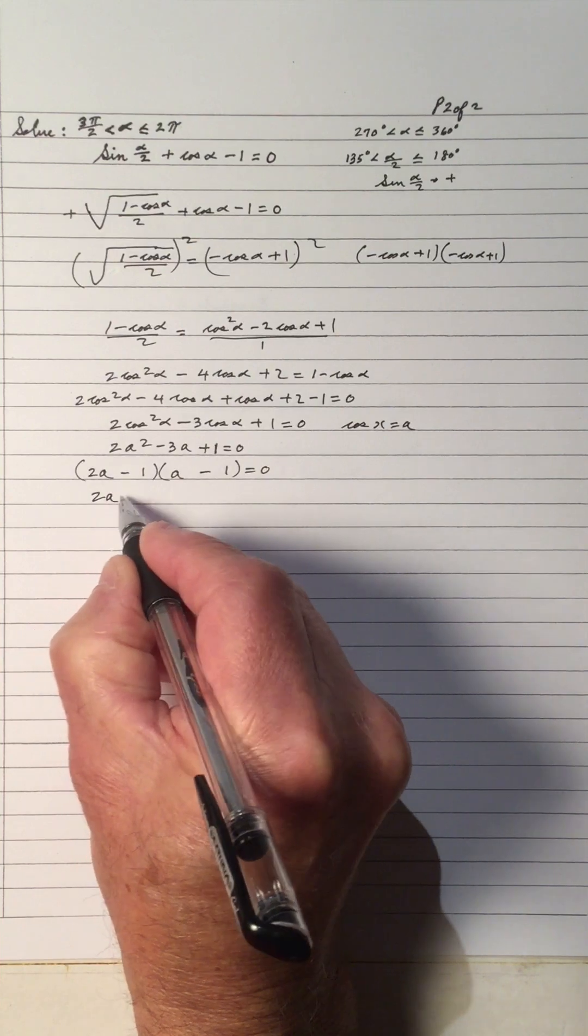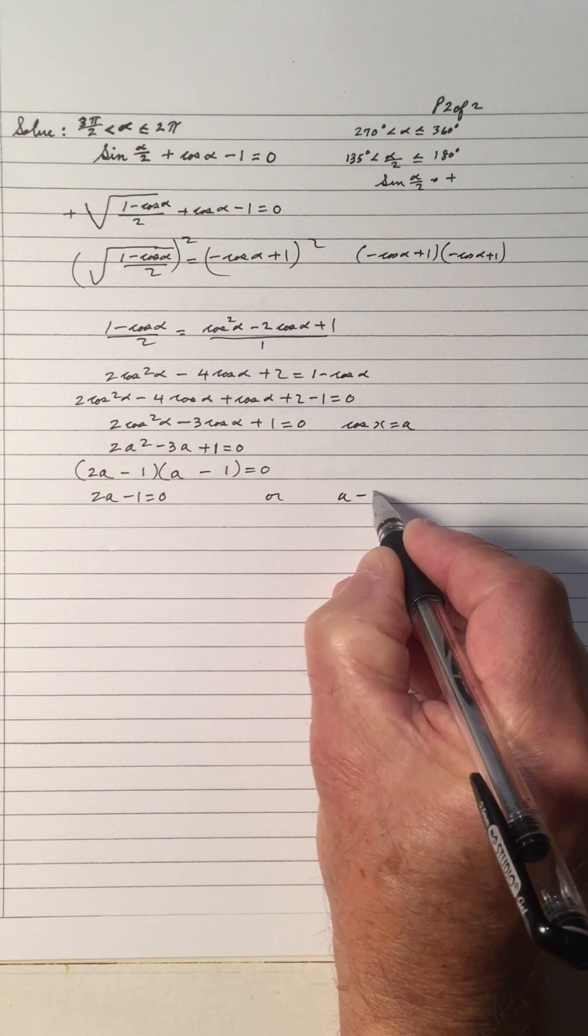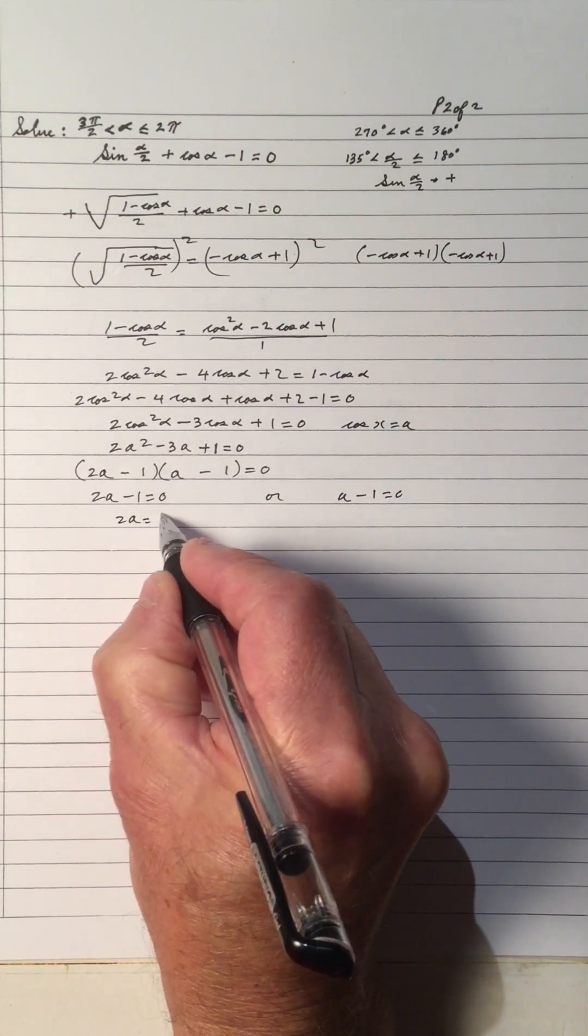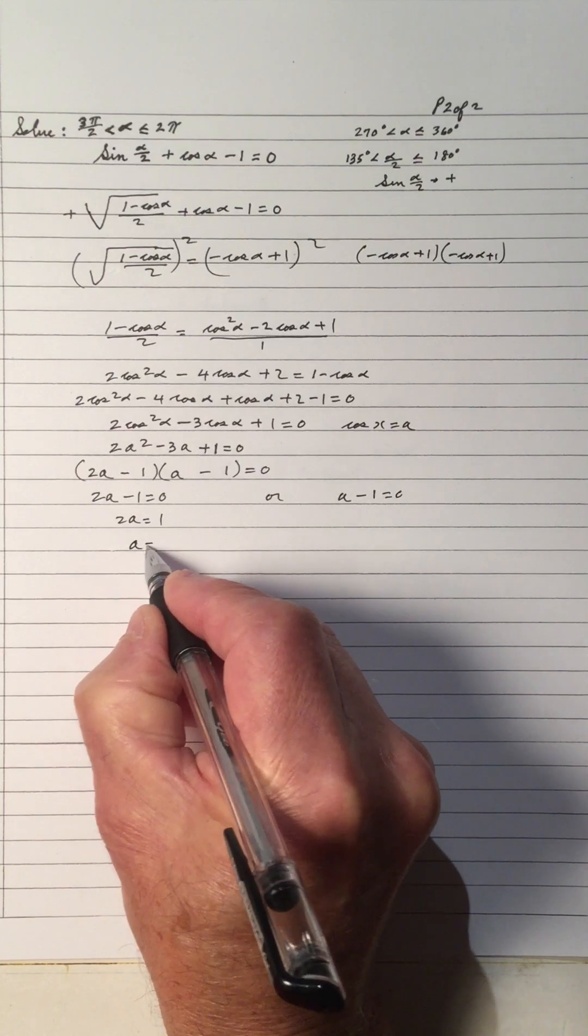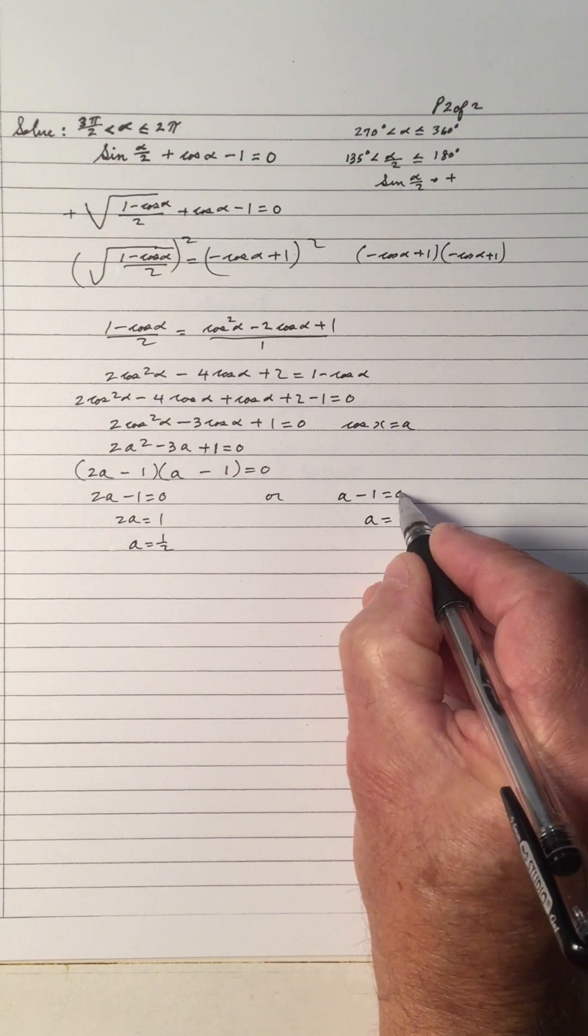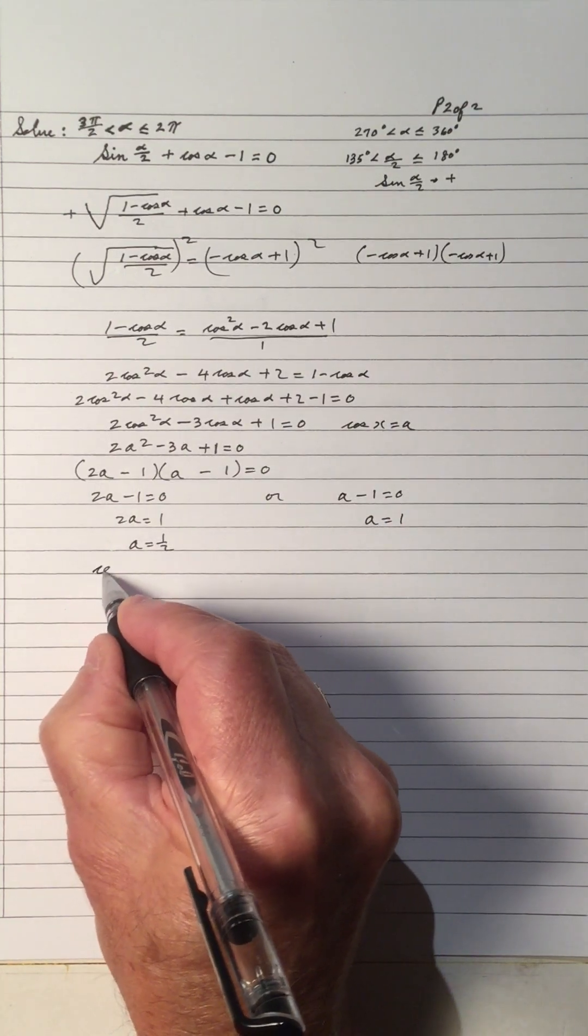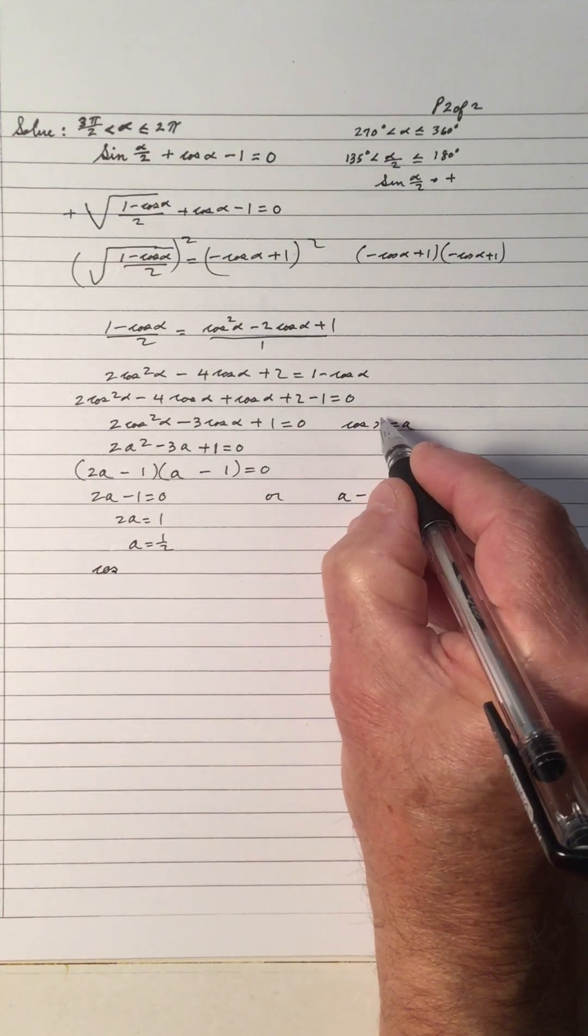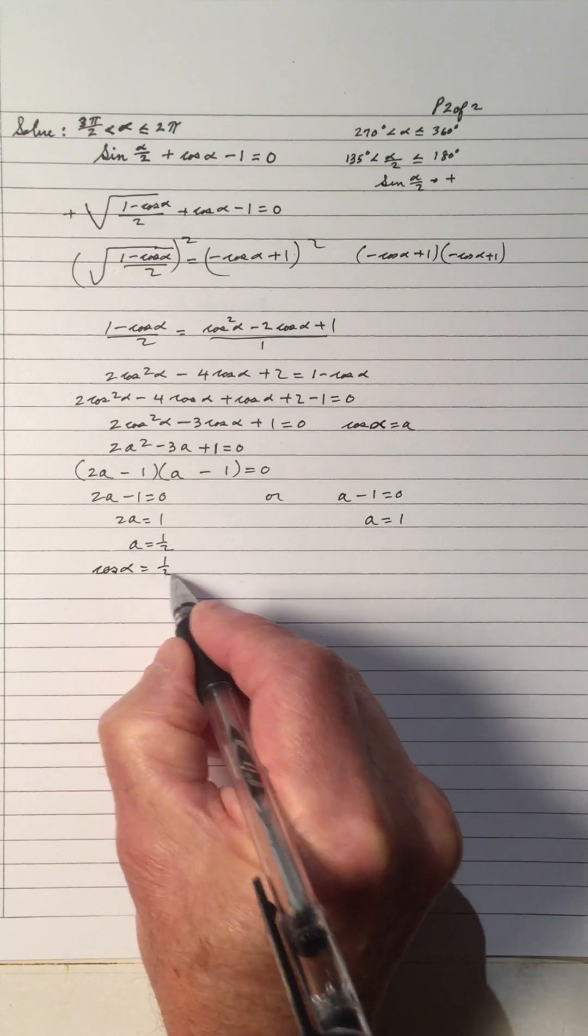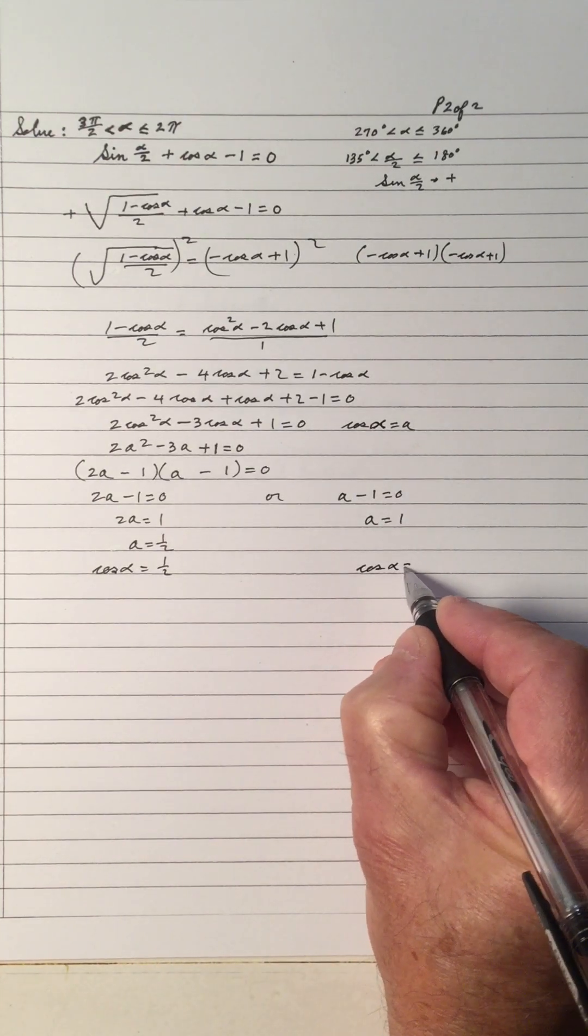So we have 2A - 1 = 0, or we have A - 1 = 0. 2A = 1, divide by 2, A is 1/2. And right here, A is equal to 1. So A is 1/2, that means we have cos α is 1/2, and cos α equals 1.